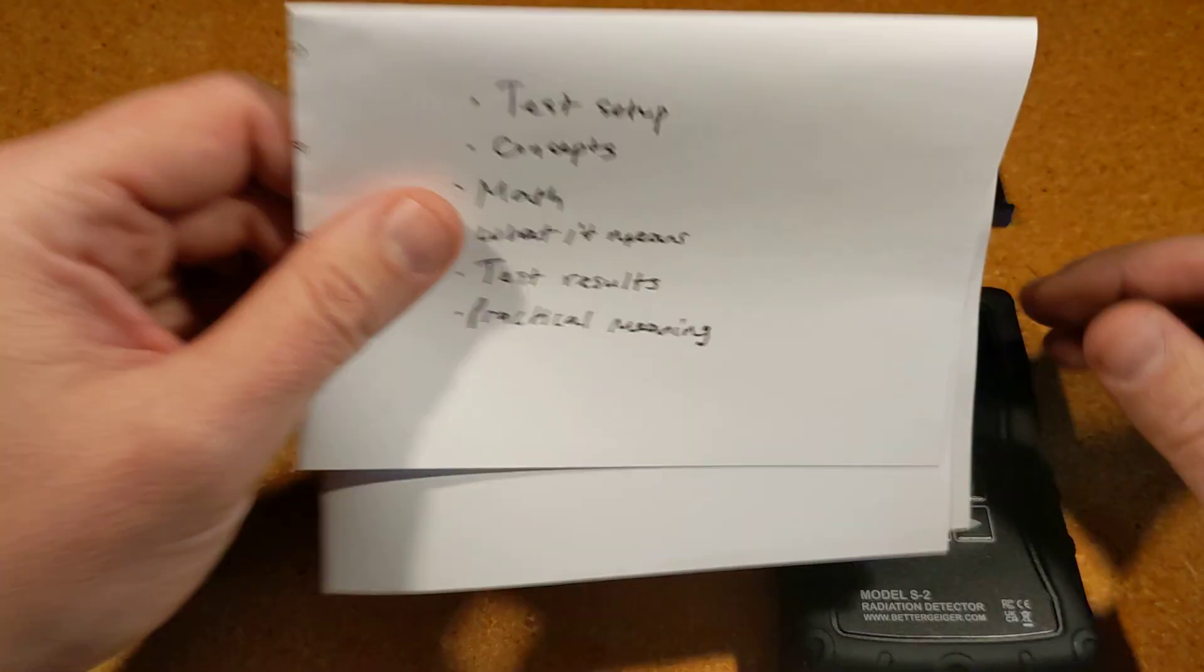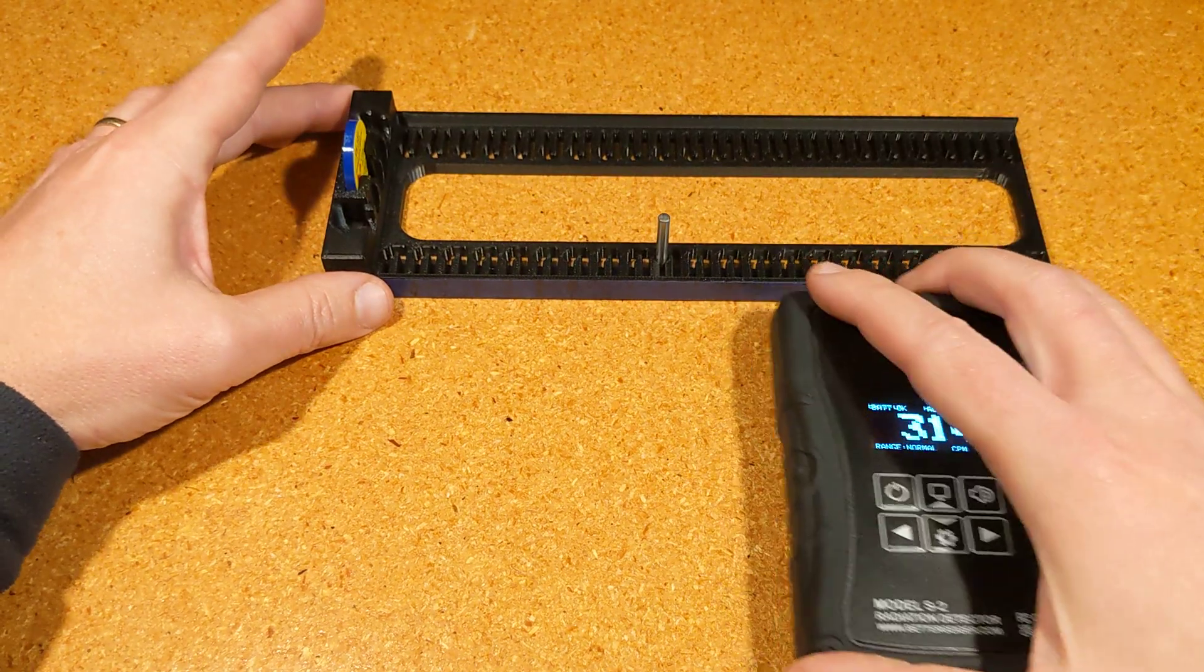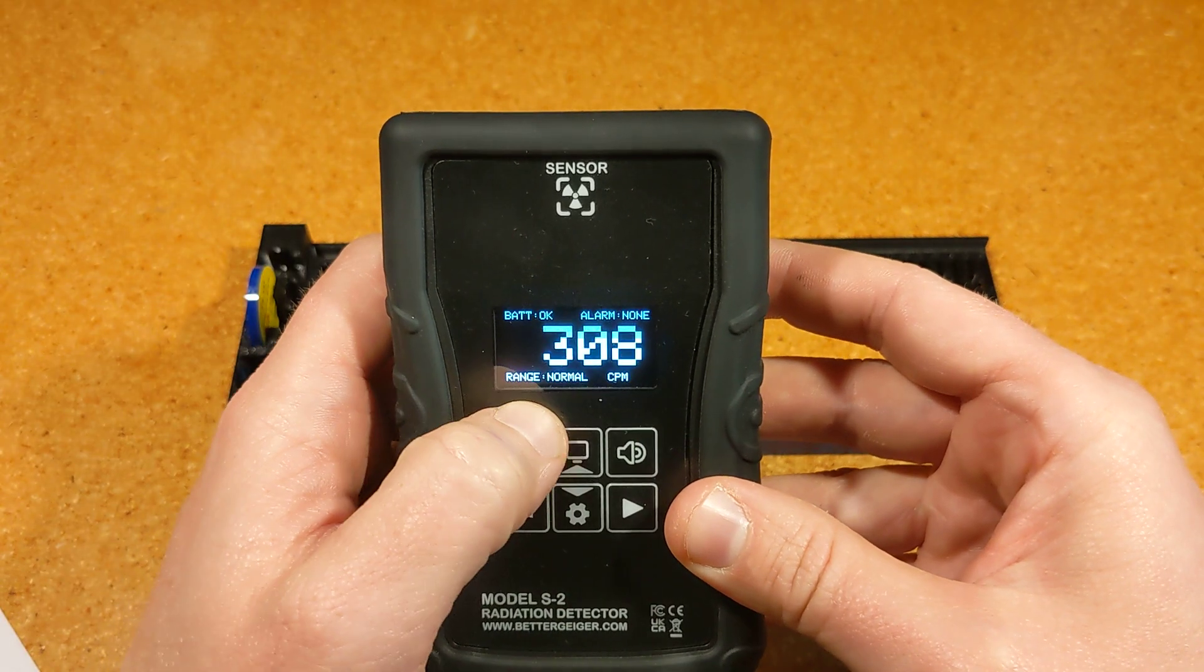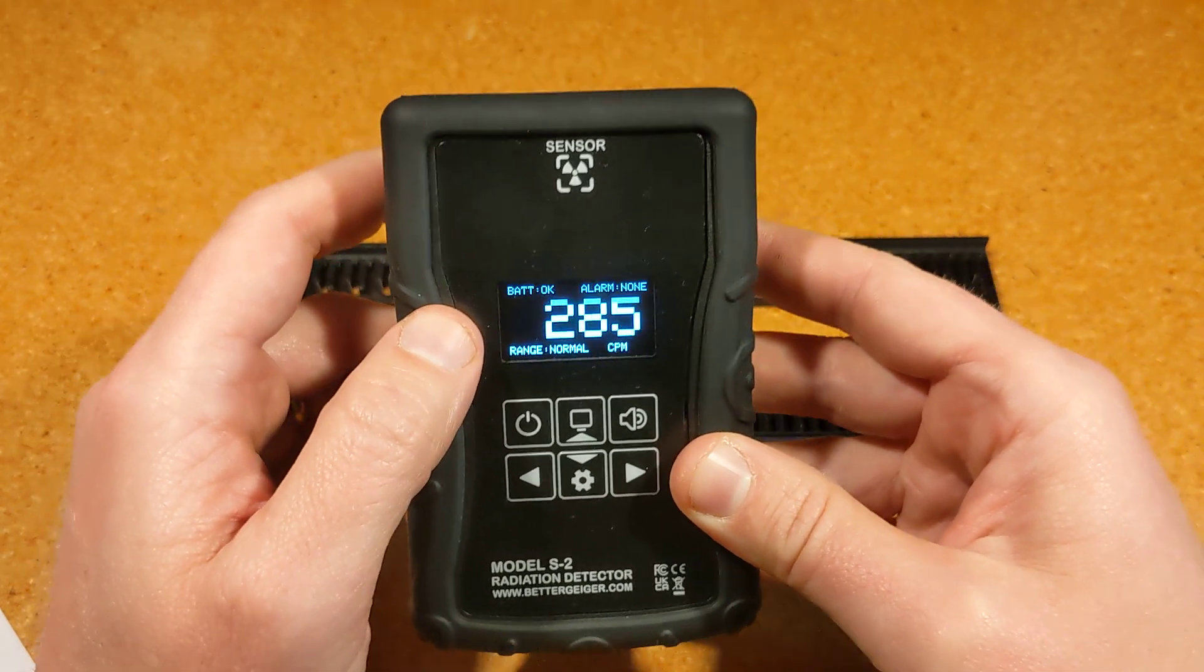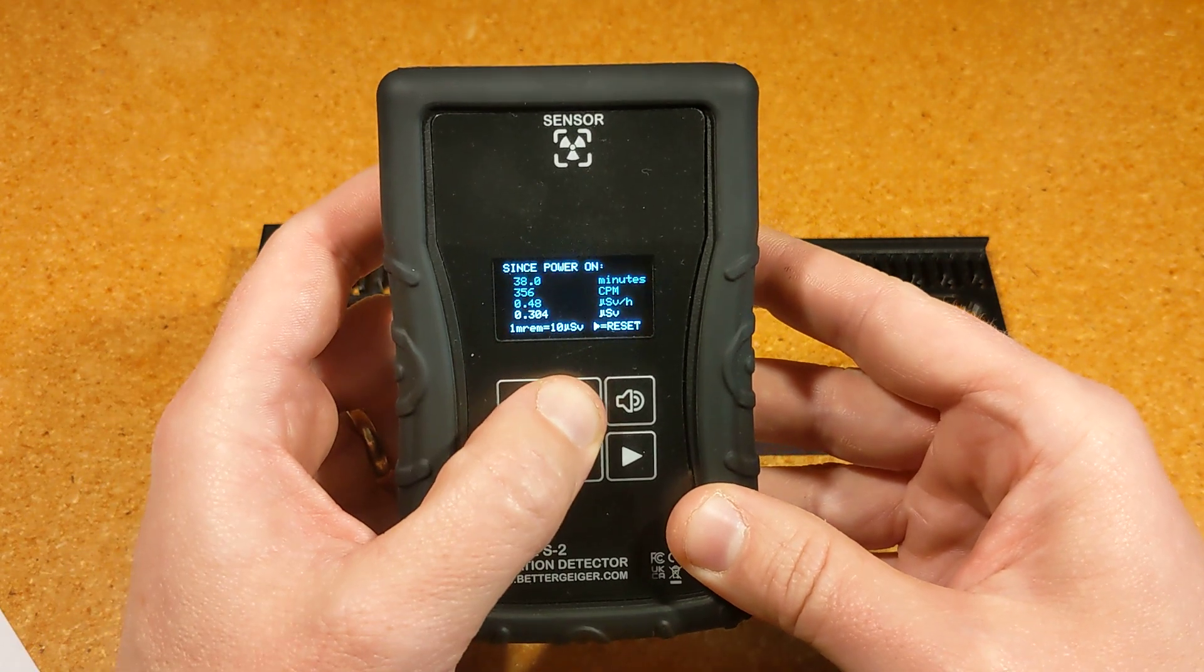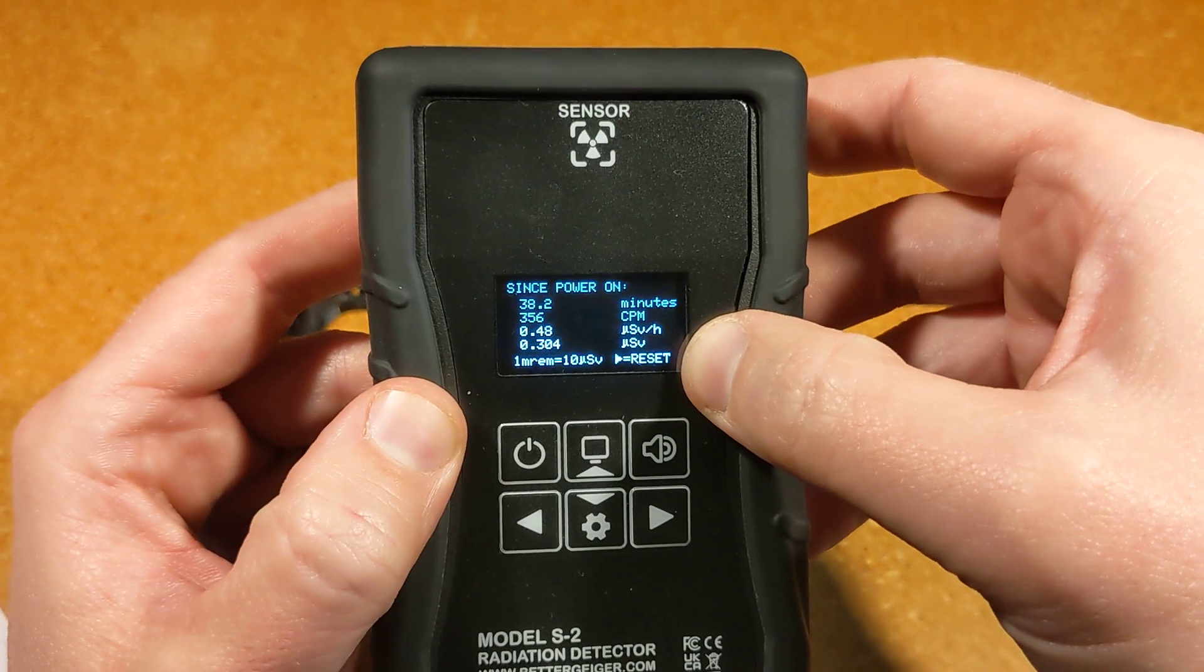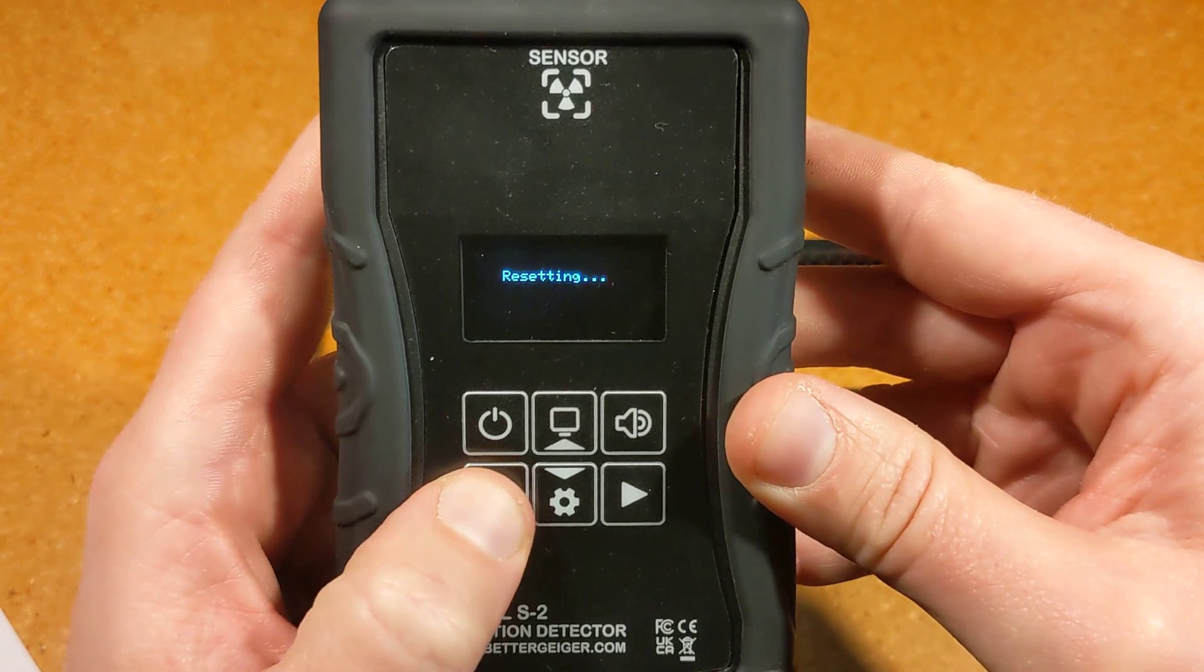We've got the test setup. This is a Better Geiger S2. Today we're mostly just going to be paying attention to the counts per minute - how much radiation is interacting with that sensor per minute. Specifically, there's a mode called 'since power on' which shows how long it's been on, the average counts per minute during that time, average dose rate, and total dose. What's important is you can press this button and reset that number.